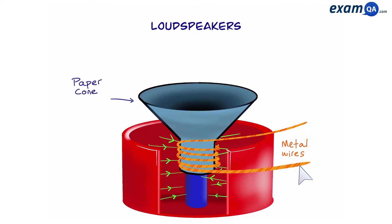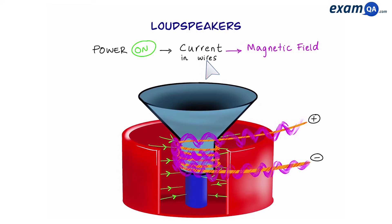Now of course loudspeakers only work when we turn the power on. This creates a current in the wires and as a result that creates a magnetic field and we know this is due to electromagnetism.